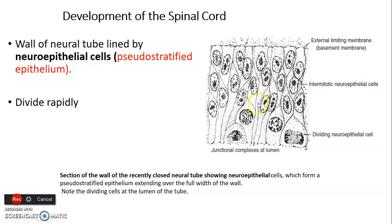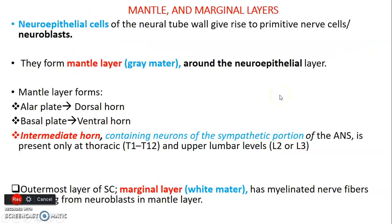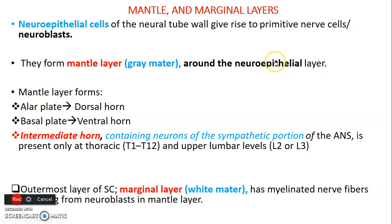The wall of the neural tube's lower third forms the spinal cord. It is lined by pseudostratified epithelium made up of neuroepithelial cells. These neuroepithelial cells rapidly divide and give rise to primitive nerve cells called neuroblasts. The neuroblasts form the mantle layer, which is the gray matter — the inner part of the spinal cord. The mantle layer develops a dorsal alar plate that gives the dorsal horn and a basal plate that gives the ventral horn.